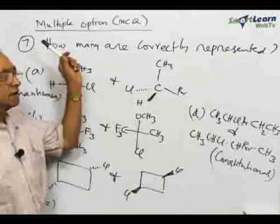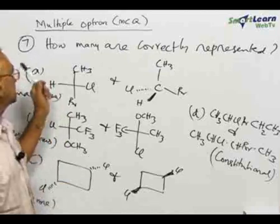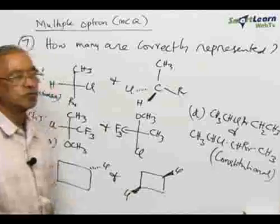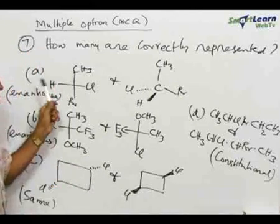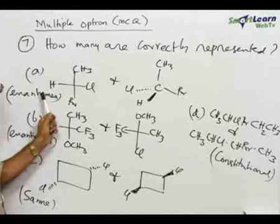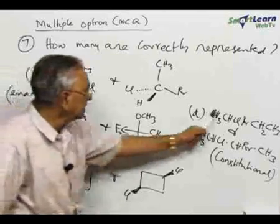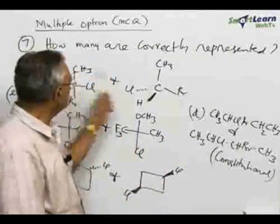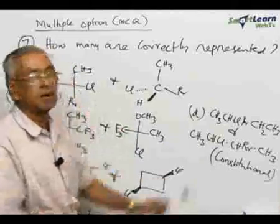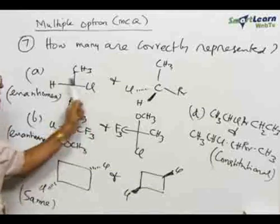We are going to the next question, a multiple choice type of question. Four pairs of compounds are given here — A, B, C, and D — and the relationship between the two compounds in each pair is indicated in brackets. They are given as enantiomers, two representations of the same compound, and constitutional isomers. The question is: how many of these pairs are correctly represented?